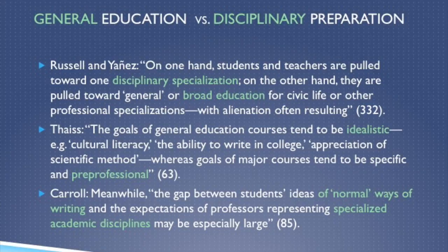To illustrate what this tension looks like, we can point to several voices in my own field of writing studies. David Russell and Arturo Yanez write that on the one hand, students and teachers are pulled towards disciplinary specialization, and on the other hand, they're pulled towards general or broad education for civic life or other professional specializations, with alienation often resulting. That alienation is kind of the key problem, because it's on both sides — students can feel alienated from professors, but professors can also feel alienated from their students' goals and desires.